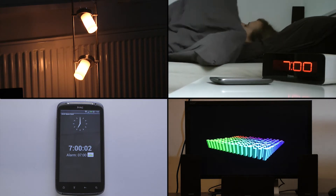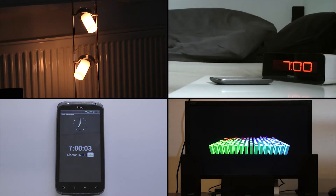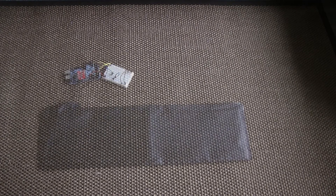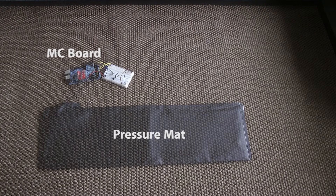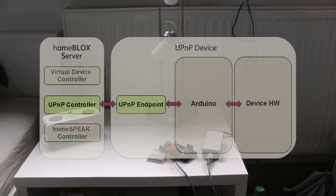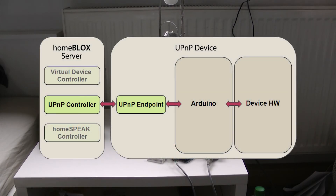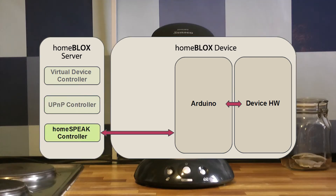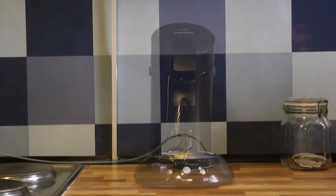we had to build this set of devices using commonly found electronics. Here you can see our pressure sensor comprised of a home security pressure mat and a microcontroller board for control and communication. The platform we used for that is the open source Arduino project. Our devices can either pose as standard UPnP devices or are more simply controlled via our own HomeSpeak protocol.